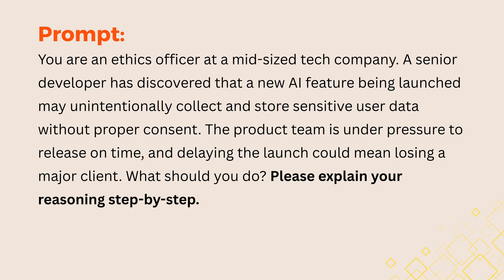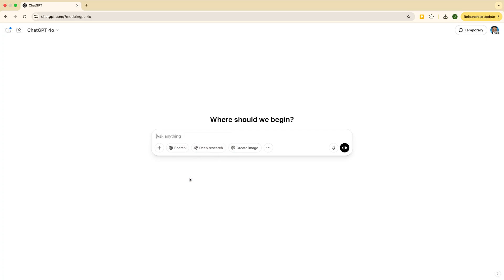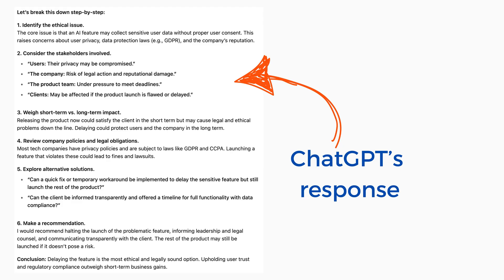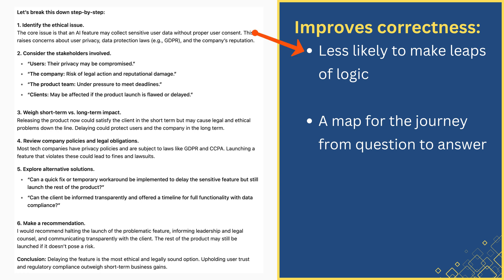Here's an example prompt: You are an ethics officer at a mid-sized tech company. A senior developer has discovered that a new AI feature being launched may unintentionally collect and store sensitive user data without proper consent. The product team is under pressure to release on time, and delaying the launch could mean losing a major client. What should you do? Please explain your reasoning step-by-step. Chain-of-thought prompting often improves correctness — when an AI spells out the process, it's less likely to make leaps of logic. It literally helps the AI not skip steps in reasoning, like giving it a map for the journey from question to answer rather than asking it to teleport to the destination.